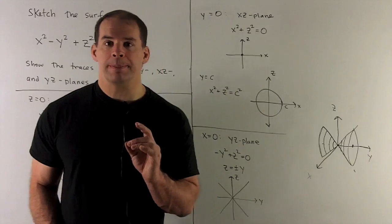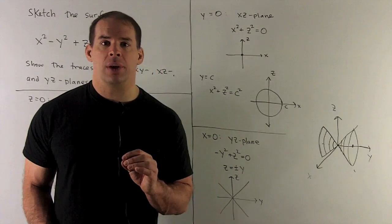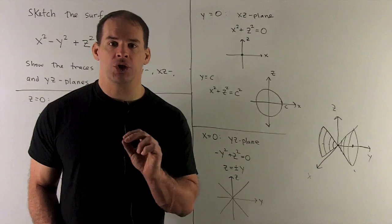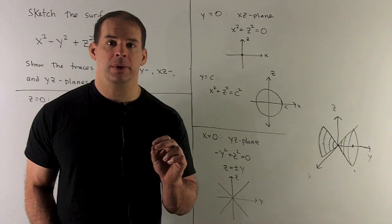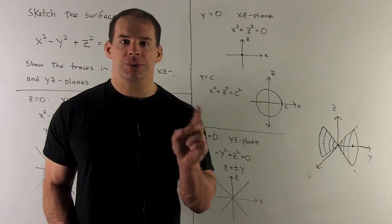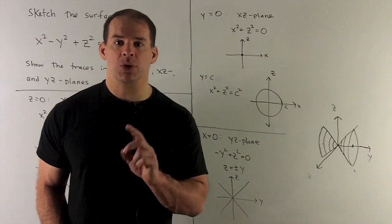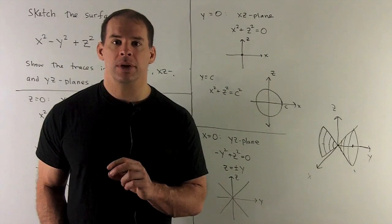For the xz plane, we let y = 0. Our equation becomes x² + z² = 0, and our trace is just the origin. The only way to add two squared numbers and get zero is if both numbers were originally zero. So we only get the origin.